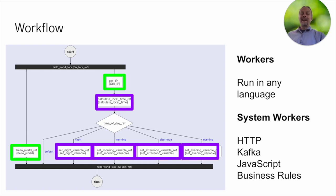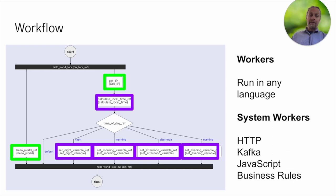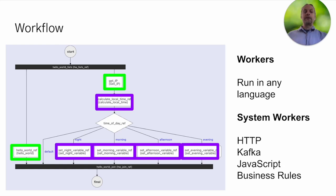Some of these built-in workers are HTTP tasks — there's no reason to roll out another worker for all your HTTP tasks, it's just built into Conductor. You can send out messages to Kafka, send off SQS, and run JavaScript. If there's some data you just need to tweak a little bit, there's also a JQ transform, which we'll talk about in a bit. These all make it easier for you to process data right there in your Conductor workflow. We also have business rules, which we're not going to cover in this talk, but there's documentation on the website if you're interested.